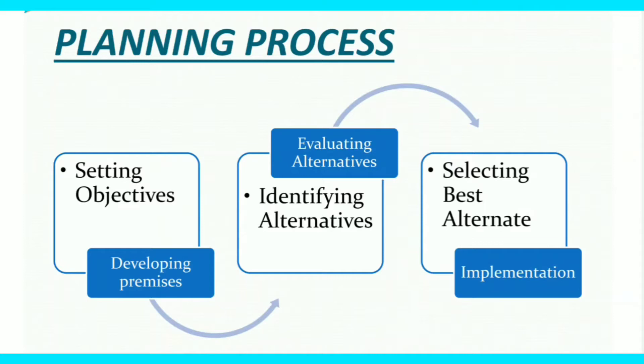The next step is identifying alternatives. Alternatives means options. There can be various options available with the management to achieve the objective, i.e. increase in sales. For example, the 1st option is using good quality of raw material; 2nd can be personal selling; 3rd can be mass level of advertisement; and one more can be providing training to the employees. These are the options which management is considering to achieve the objective.